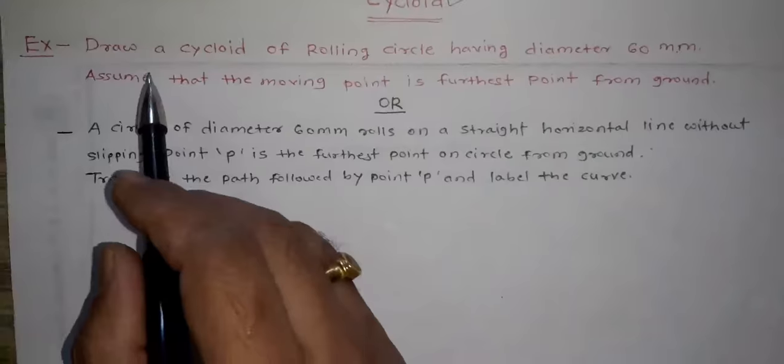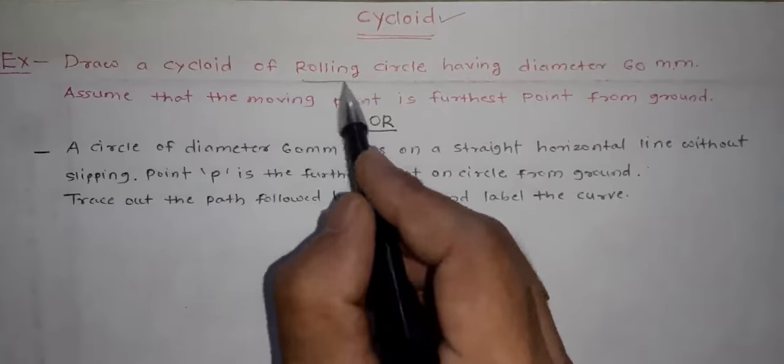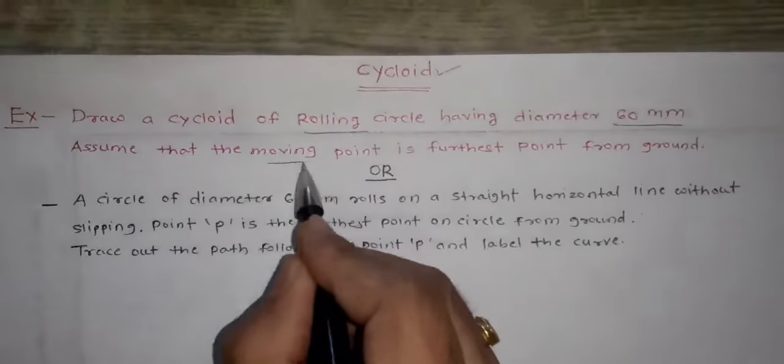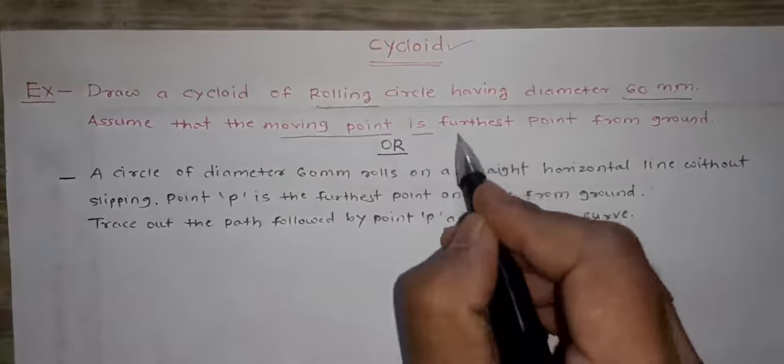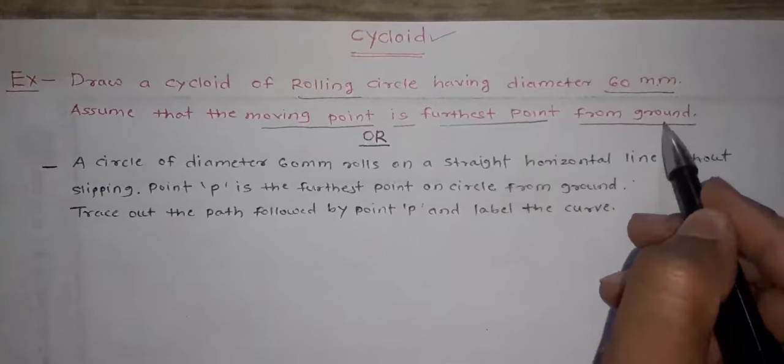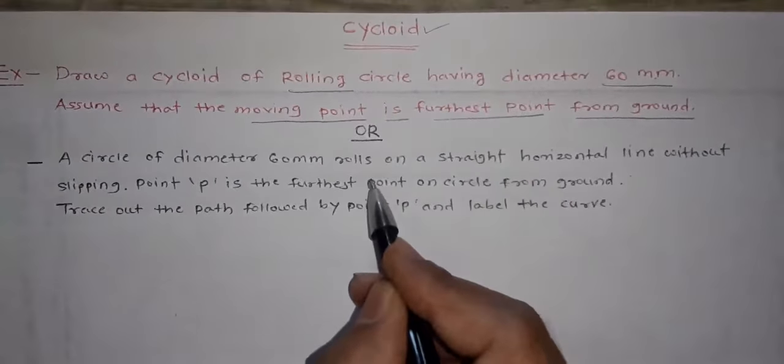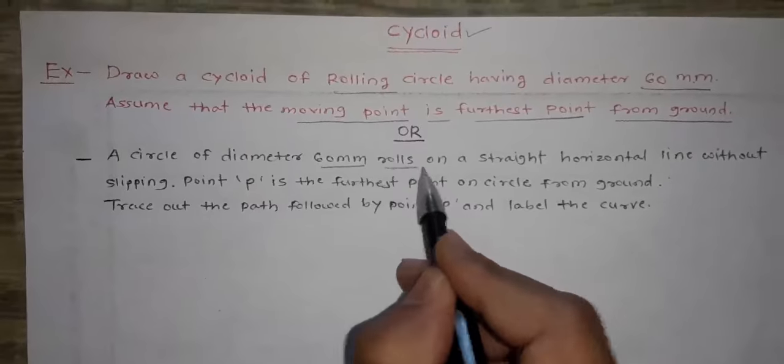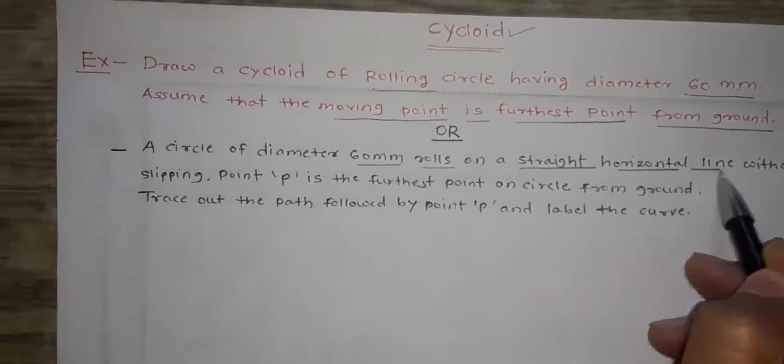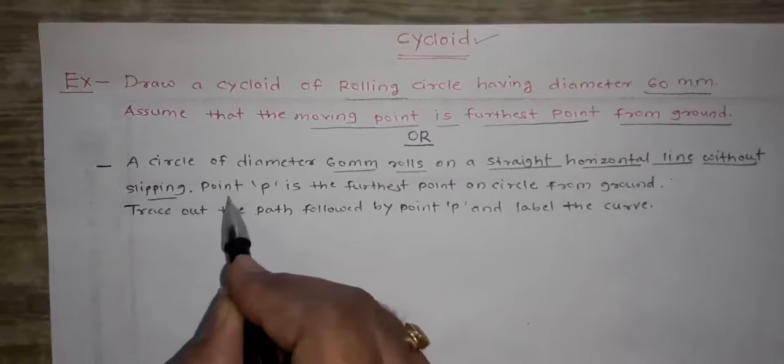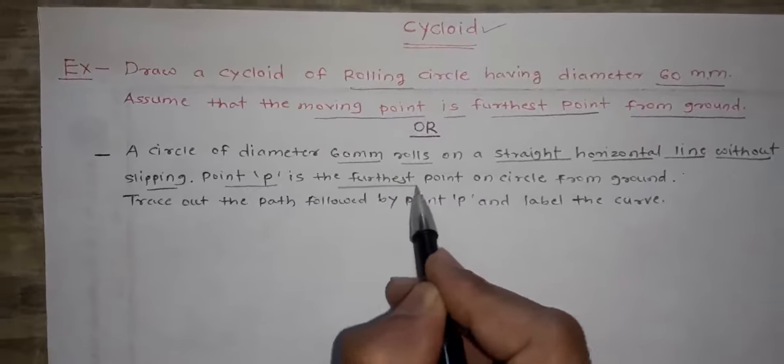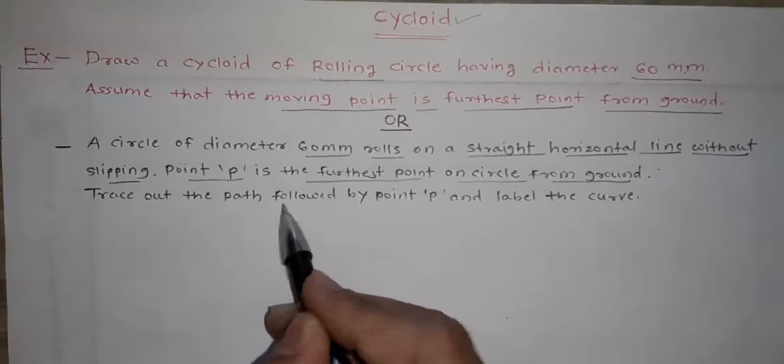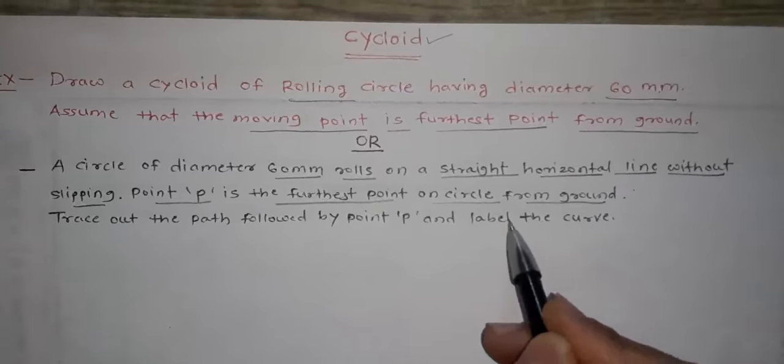So here is the problem statement: draw a cycloid of rolling circle having diameter 60mm, assume that the moving point is furthest point from the ground. Or the problem statement is like this: a circle of diameter 60mm rolls on a straight horizontal line without slipping. Point P is the furthest point on a circle from the ground. Trace out the path followed by point P and label the curve.